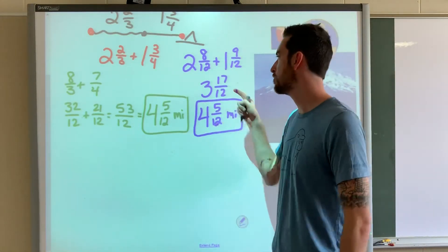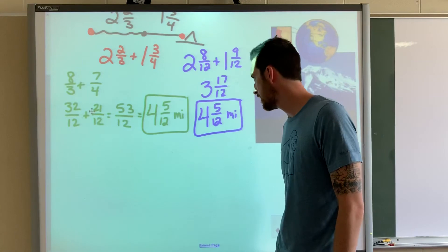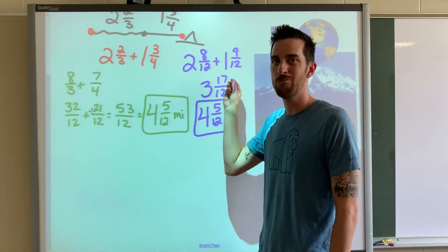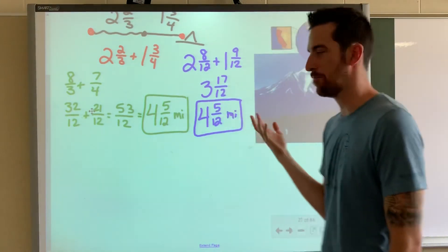So make sure you make that adjustment if you're going to do that at the end. Because you can't have the numerator bigger than the denominator if it's a mixed number.